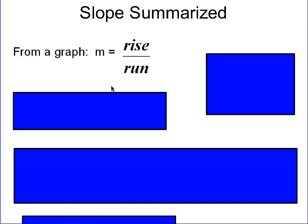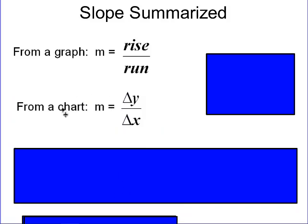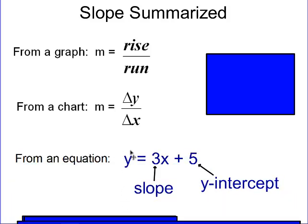From a t-chart, we do Delta Y divided by Delta X — the change on the right-hand side divided by the change on the left-hand side. From an equation, it tells us pretty easily: the slope is the number in front of our X, that's our M value, and the y-intercept is the number by itself — the one not attached to a letter. So in Y = MX + B, the B value is our y-intercept.